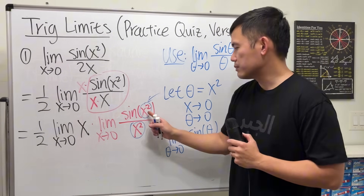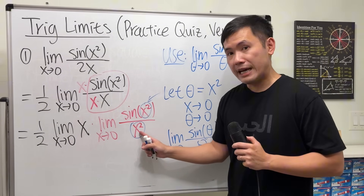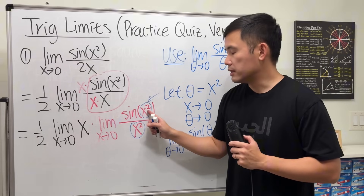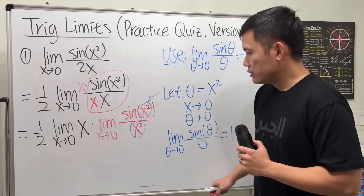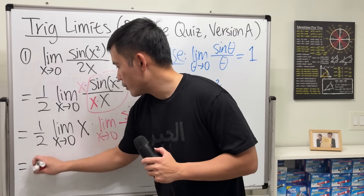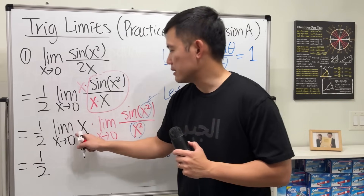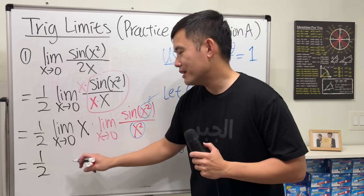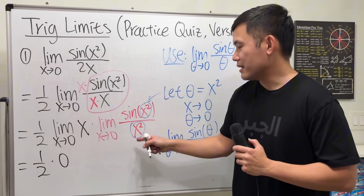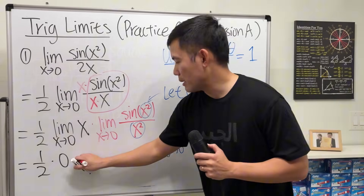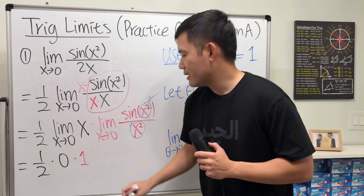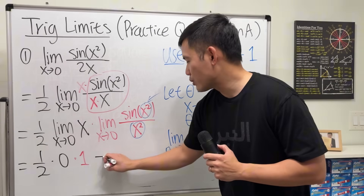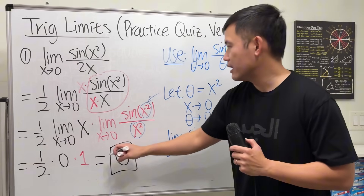The quick way: just make sure this and that match, and that as the variable approaches 0, the other also approaches 0. So we have 1/2 times the limit of x as x→0 (which is 0) times the limit of sine(x²)/x² (which is 1). One half times zero times one — the answer is zero.